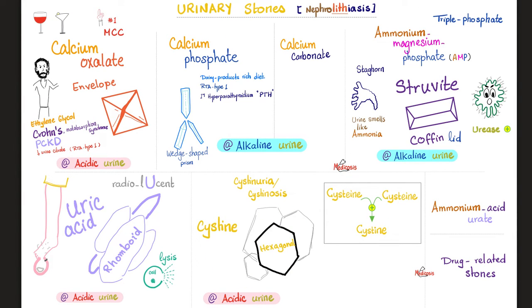How do these cystin stones look? They are hexagonal, translucent, and white in color, and they precipitate in acidic urine.